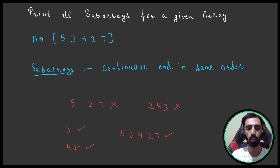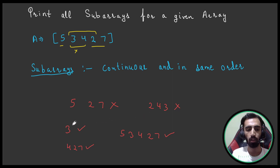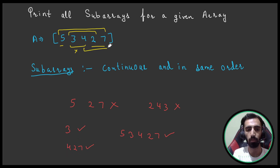Let's quickly try to understand what a subarray is. Given an array, for example: 5, 3, 4, 2, 7 — a subarray is part of this array only, which should be continuous and in the same order. For example, 5, 2, 7 is not a correct subarray because we are skipping elements in between. Also, 2, 4, 3 or 3, 4, 2 are continuous but not in correct order. A single element like 3 alone is a subarray, and the complete array 5, 3, 4, 2, 7 can also be a subarray. 4, 2, 7 is also a valid subarray.